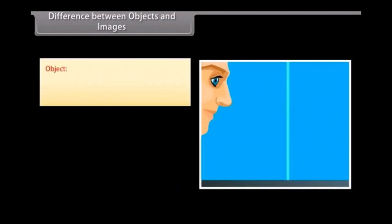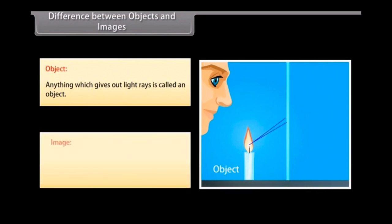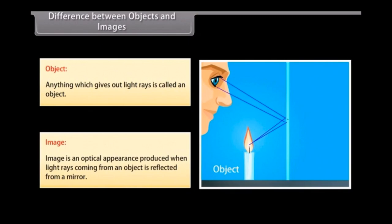Difference between objects and images. Object: anything which gives out light rays is called an object. Image is an optical appearance produced when light rays coming from an object are reflected from a mirror.